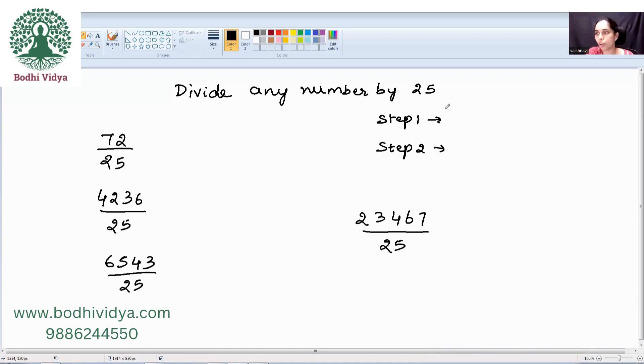So, there are two steps involved. First step is multiply the number that has to be divided by 25 by what? 4. Multiply the number by 4.